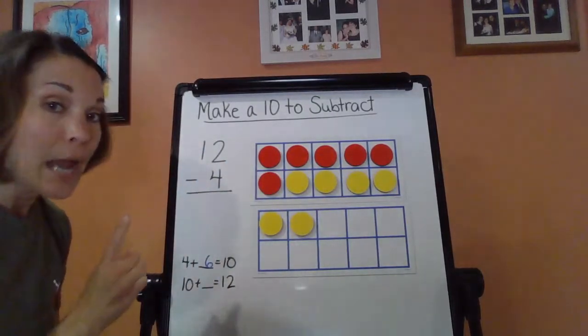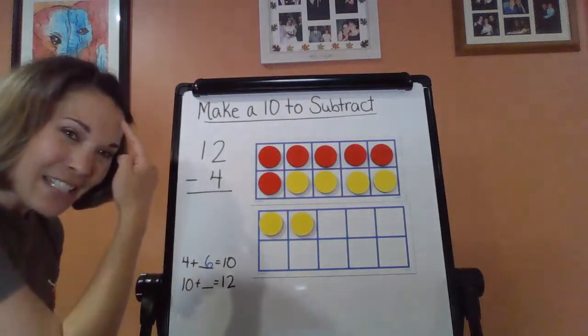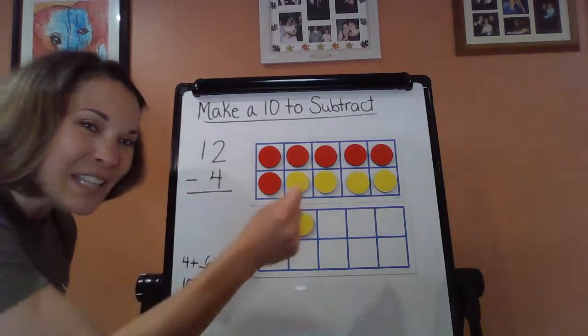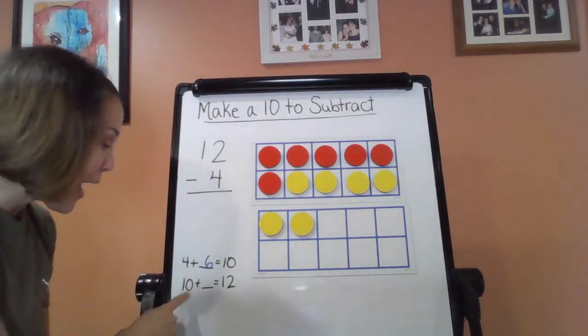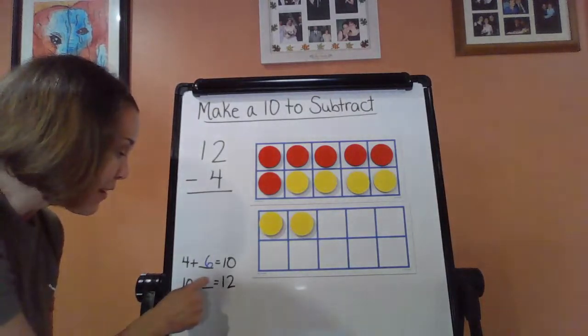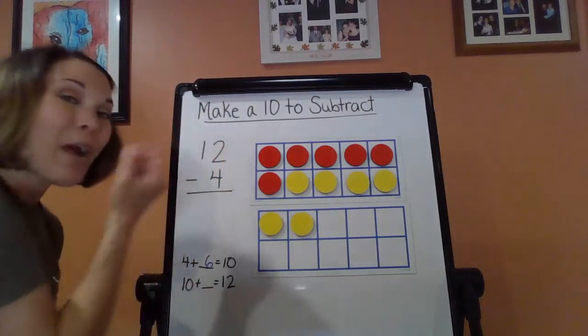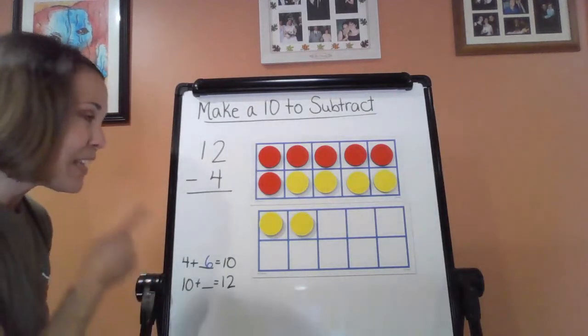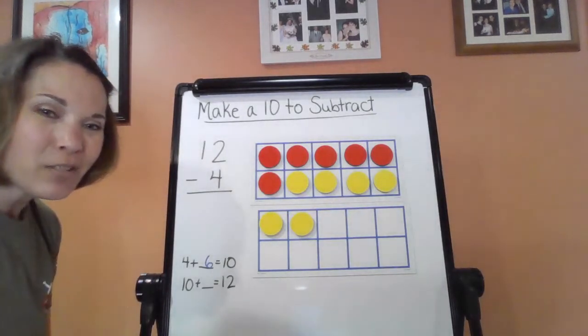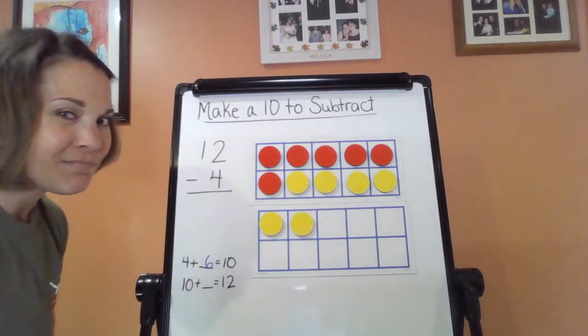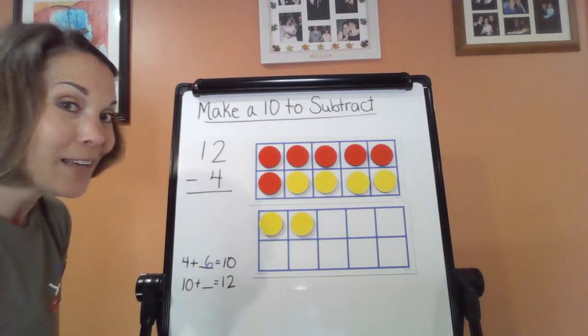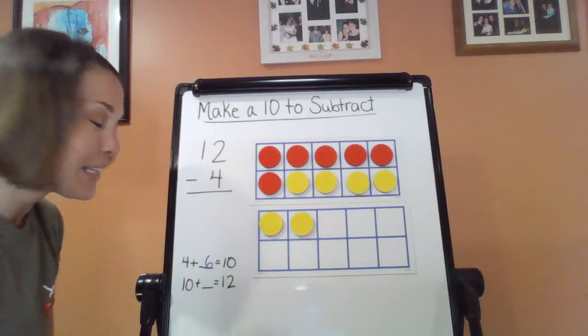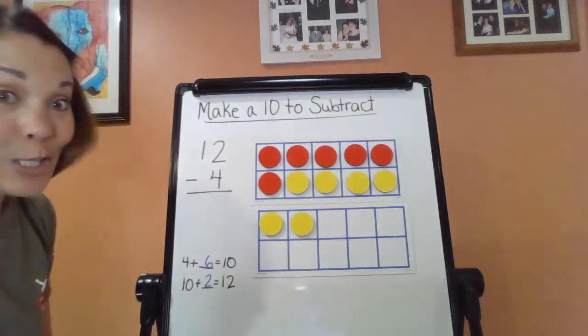I'm not done yet. Because now I'm at 10 here. 4 plus 6 gave me 10. So now I have to go from 10 and add two more. Remember, I want to get to that whole, that 12. So 10 plus how many more is going to give you 12? You should know. Adding anything to a 10 is pretty easy. Two.